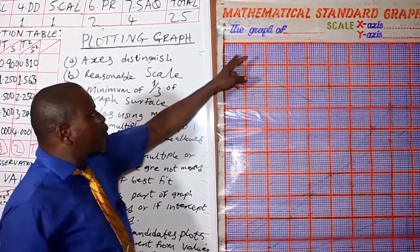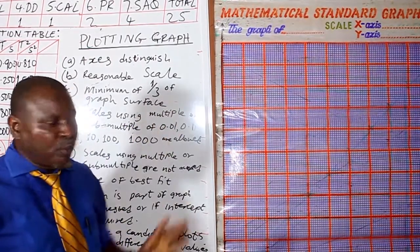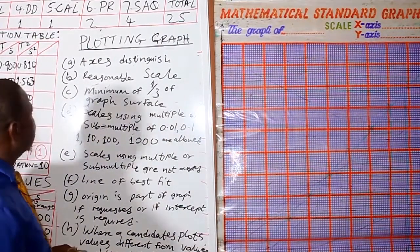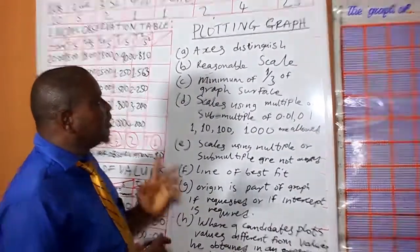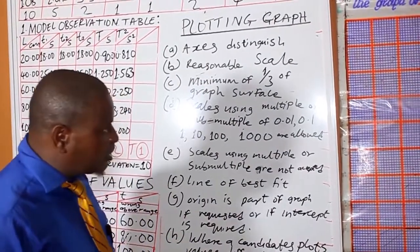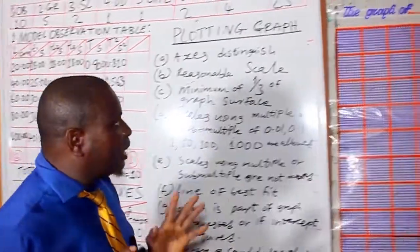Each of the big squares are made up of 10 small squares. Now, you must distinguish your axis. This is how to distinguish axis, to identify your axis.